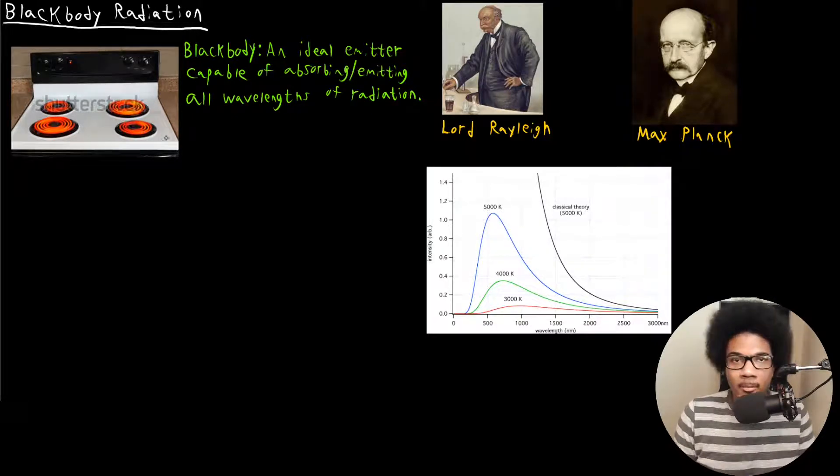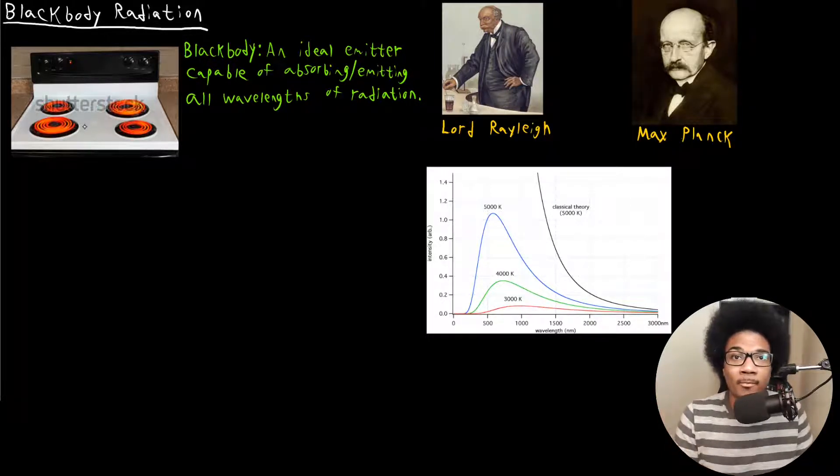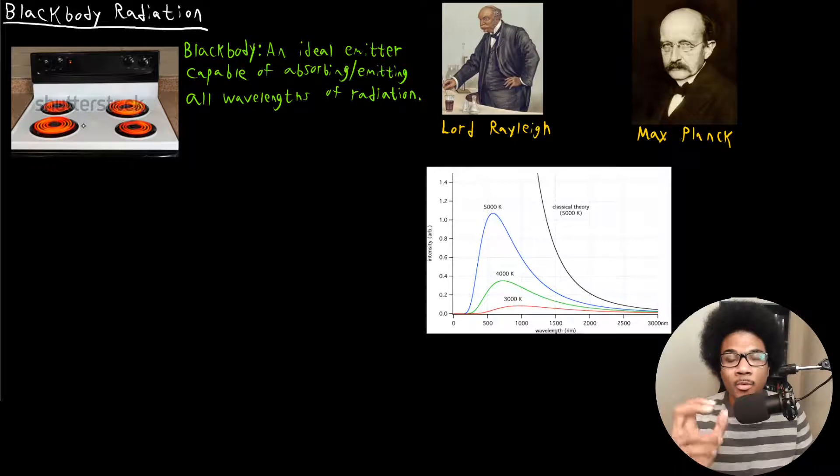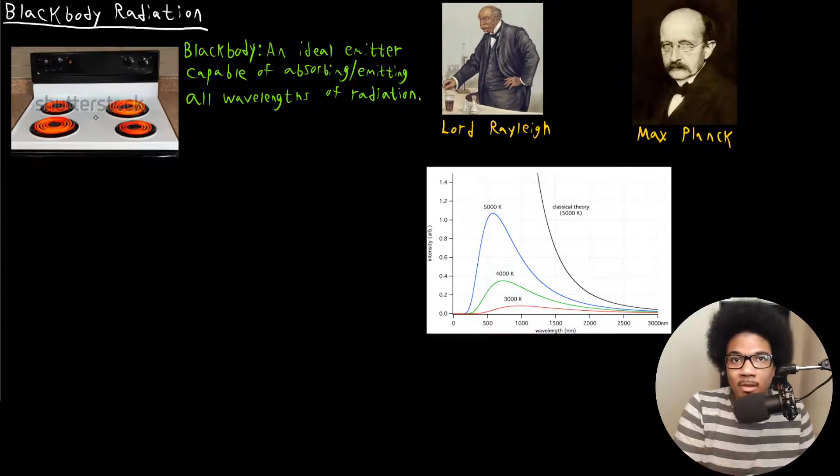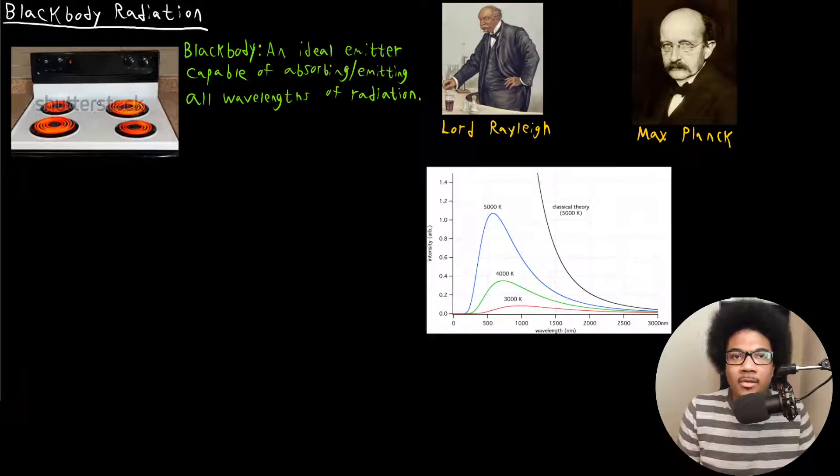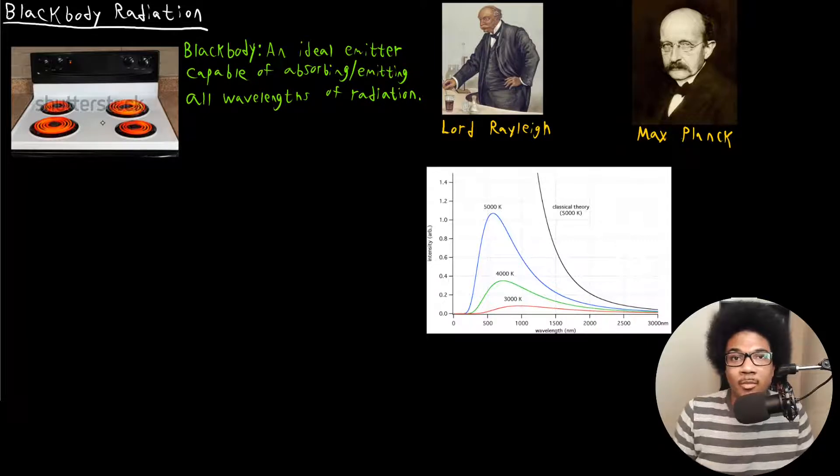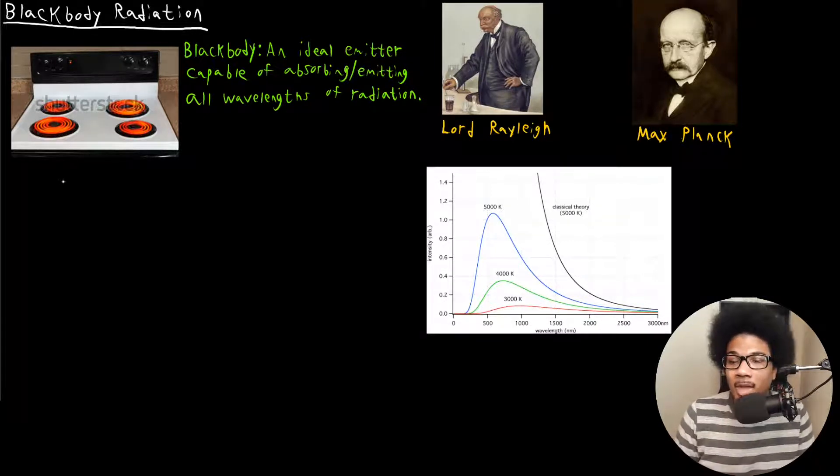When you heat up metal to a certain really high temperature, you see this on stovetops all the time, it starts to glow. It's emitting radiation in all frequencies of light, but a large portion of that is in the visible region. That's why you see it glow that reddish-orange color, because it's emitting a lot of radiation in the visible region caused by that high temperature of the metal.